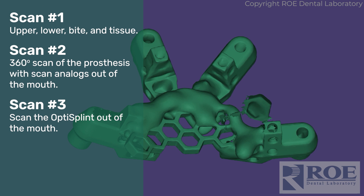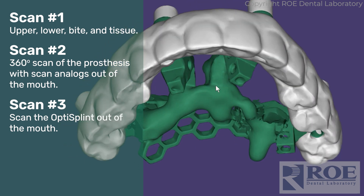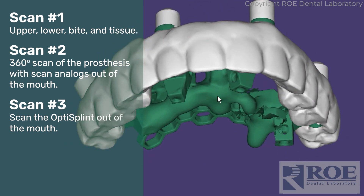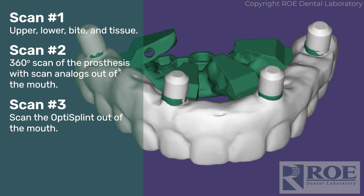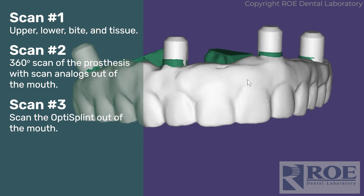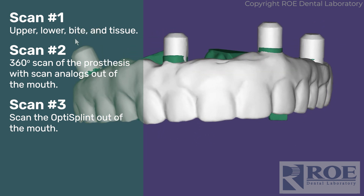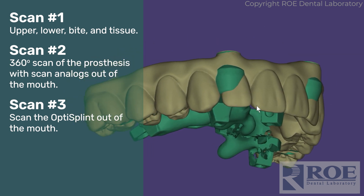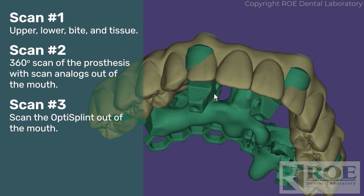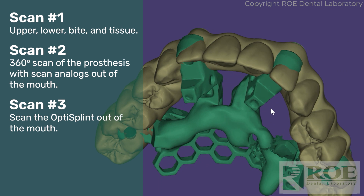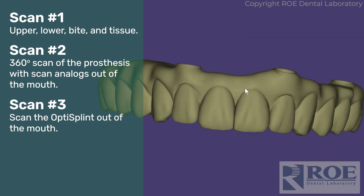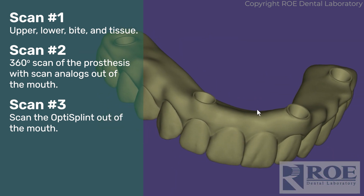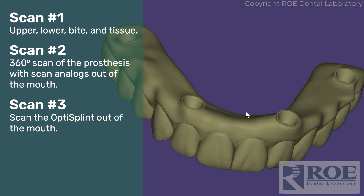You will combine and merge the opti splint scan with the prosthesis scan. In this case, we'll use the intaglio as the tissue reference, and based on that we will design a prosthesis and either send it to you to print for a try-in, or we will fabricate it here.